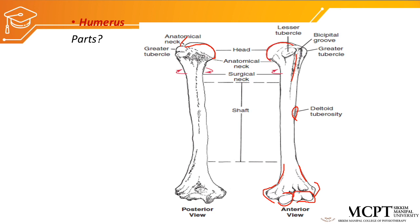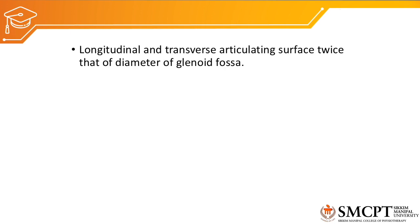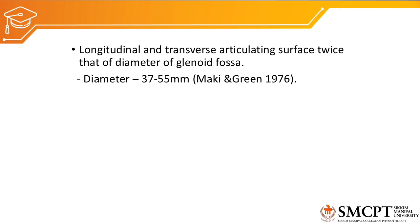The head of the humerus articulates with the glenoid cavity, whereas the capitulum and trochlea inferiorly articulate with the radius and ulna. The longitudinal and transverse articulating surface of the humeral head is twice that of the diameter of the glenoid fossa. The diameter of the humeral head is about 37 to 55 millimeters, so there is a high chance of anterior, posterior, or inferior dislocation. The glenohumeral joint is one of the most mobile joints, but this compromises stability.